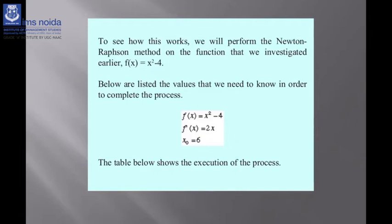To see how this works, we will apply Newton's method to the function f(x) = x² − 4. Setting f(x) = 0 gives x² − 4 = 0. We take f(x) = x² − 4, so f′(x) = 2x.